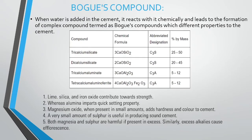The Bogue's compounds include: Tricalcium silicate (C3S) 20–50%, Dicalcium silicate (C2S), Tricalcium aluminate (C3A) 5–12%, and Tetracalcium aluminoferrite (C4AF) 5–12%. Lime, silica, and iron oxide contribute towards strength.